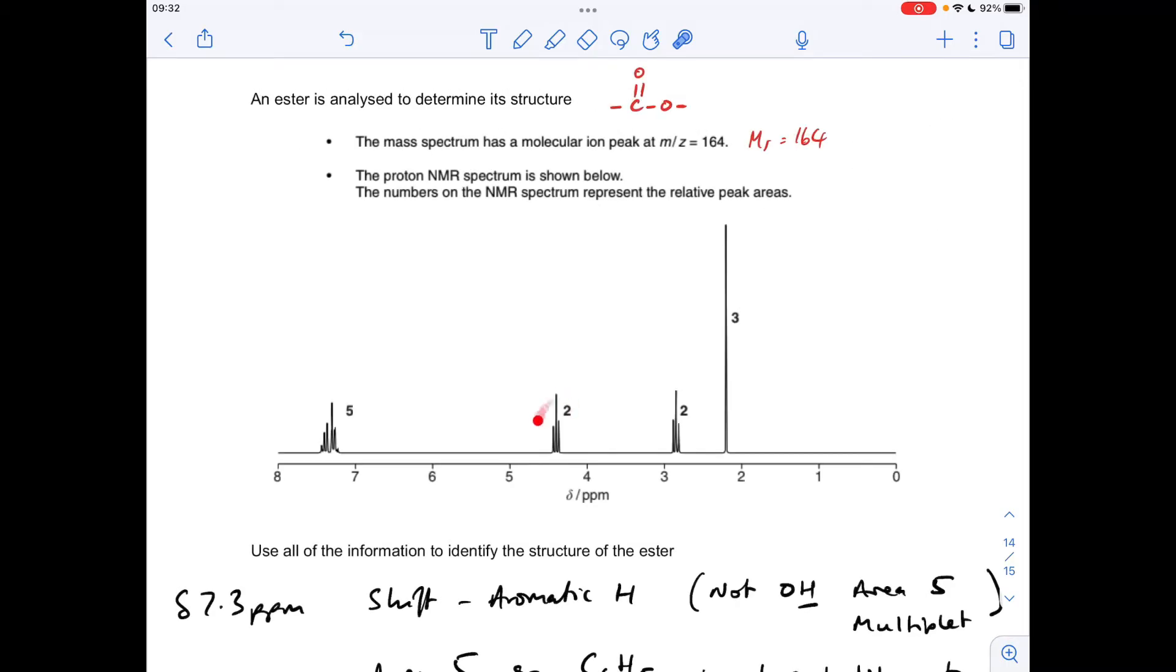So moving on to this signal now, this is a triplet, so there's an adjacent CH2 to the protons causing the signal. The area of 2 tells us that it's a CH2 group that's causing the signal, and the shift value of, what's that, 4.4, is the H to C to single bond O environment. So H to C to single bond O, which is obviously on the right-hand side of the ester group that we have drawn it.